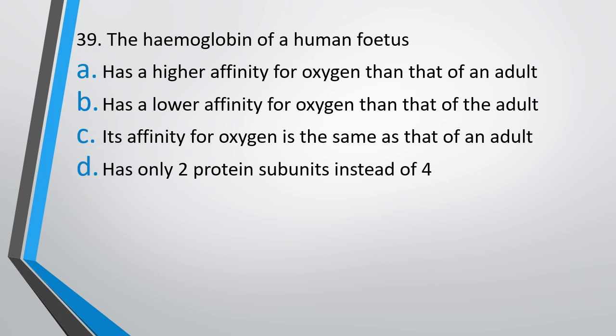Question number 39. The hemoglobin of human fetus has higher affinity for oxygen than that of an adult, has lower affinity for oxygen than that of an adult, its affinity for oxygen is same as that of an adult, or has only 2 protein subunits instead of 4. The correct answer is option A. It has a higher affinity for oxygen than that of an adult.